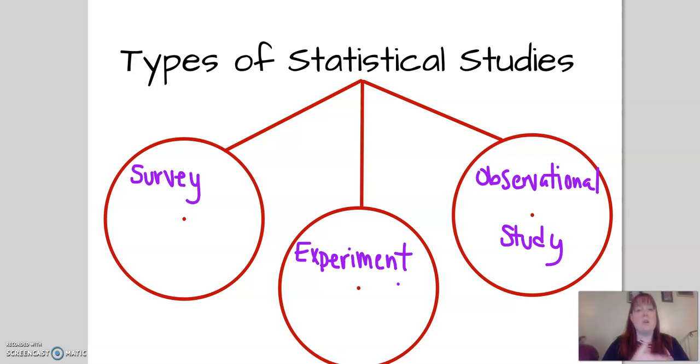There are three different ways that we could collect data, and we call those statistical studies. So basically, we start with a question, and then we collect data by doing a study, and then we're going to look at that data and figure out the answer to our statistical question, or at least some inferences we can make based on that data.